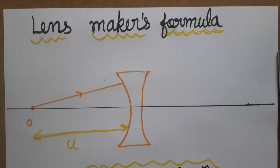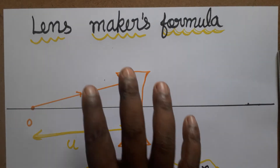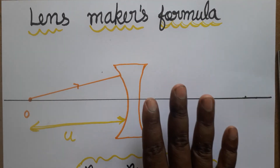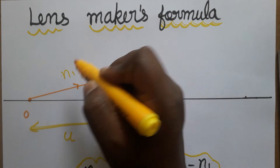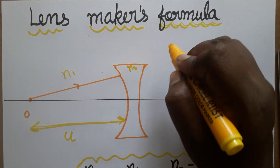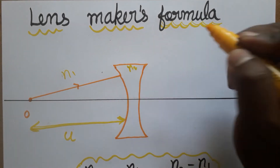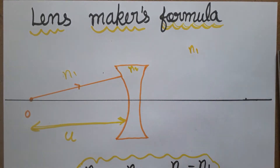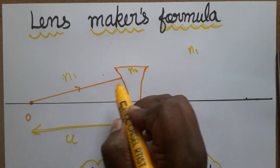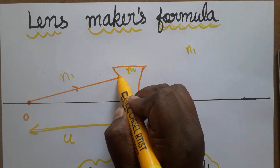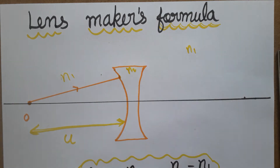Today we are going to learn how to derive the lens maker's formula for the concave lens. Here we have the concave lens. The first medium refractive index is taken as n1, the second medium refractive index is n2, and again the third medium is the same as the first, so it is again n1. The object is placed here.